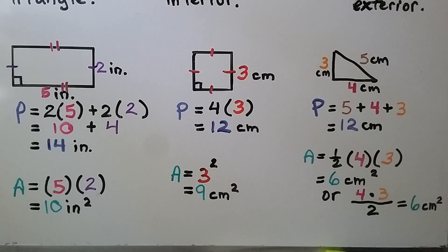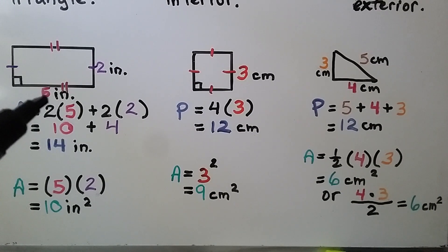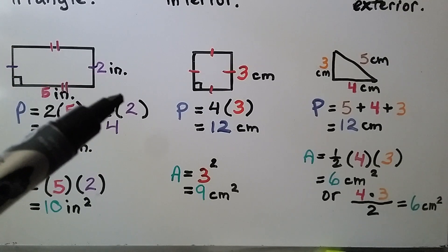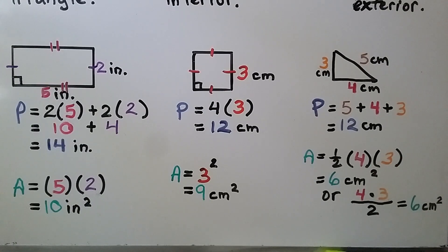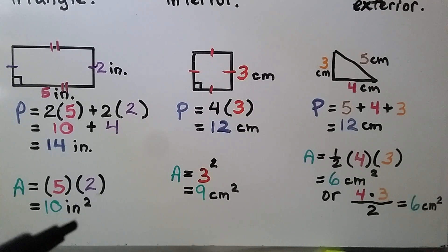Here are some quick examples. To find the perimeter of a rectangle, we do 2 times 5 plus 2 times 2 — that's 10 plus 4, which is 14 inches. The area is 5 times 2, which is 10 square inches. Perimeter is expressed in linear units, and area is expressed in square units.